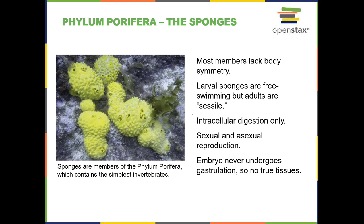When they are larvae, after egg and sperm fuse, it grows into a small larva and swims. But the adults are what we call sessile, meaning they attach to a surface and stay in one place. They only have intracellular digestion, where a single cell takes in, by endocytosis, a food vacuole. That food vacuole fuses with a lysosome, which contains hydrolytic enzymes that break down the macromolecules, releasing monomer units into the cytosol for the cell to use.